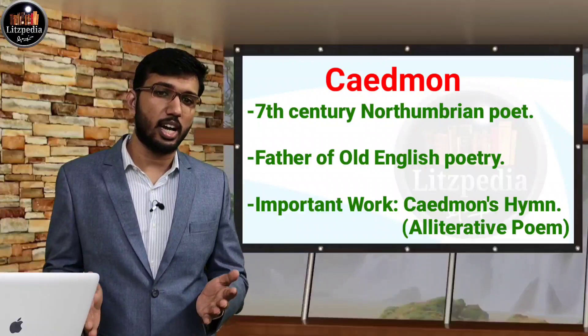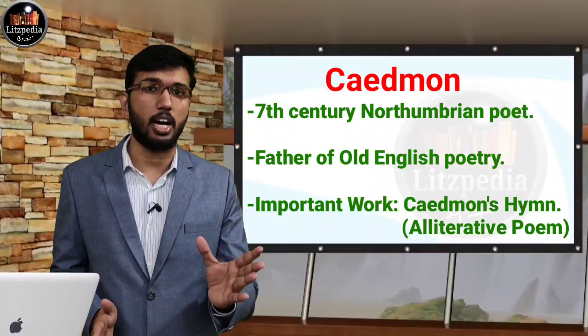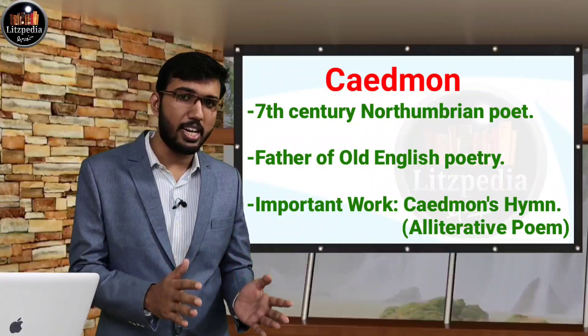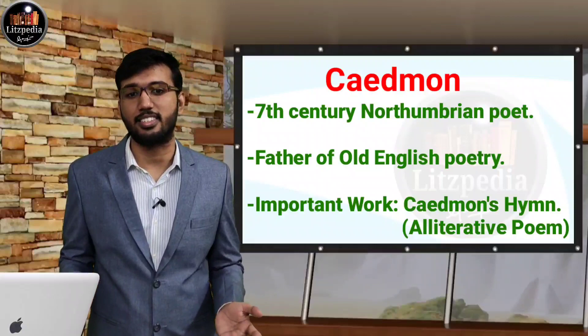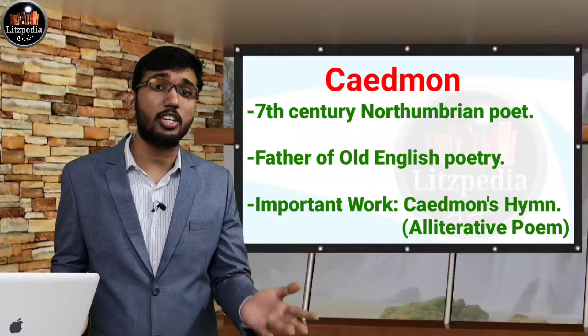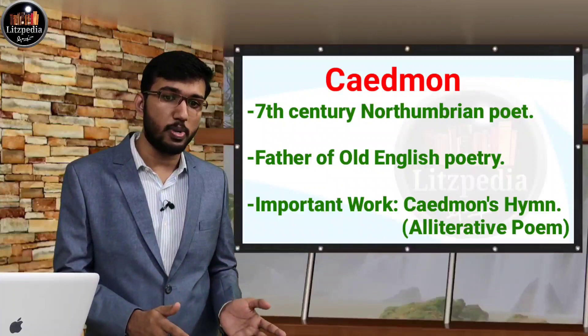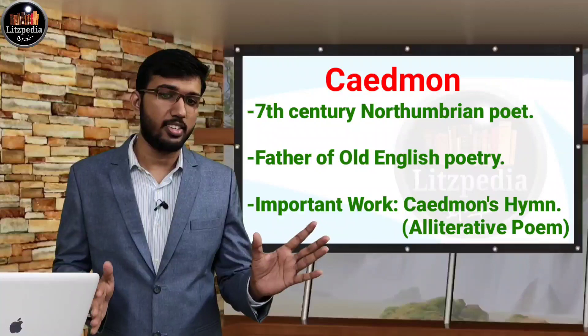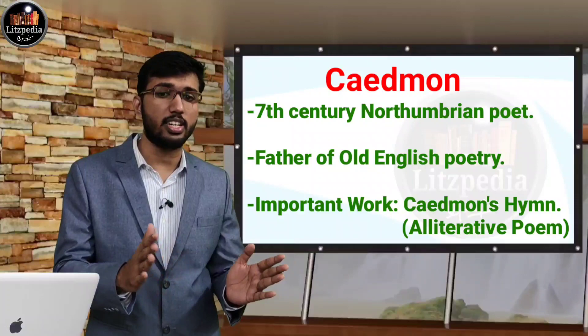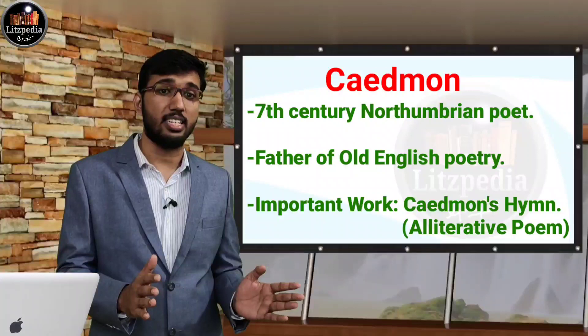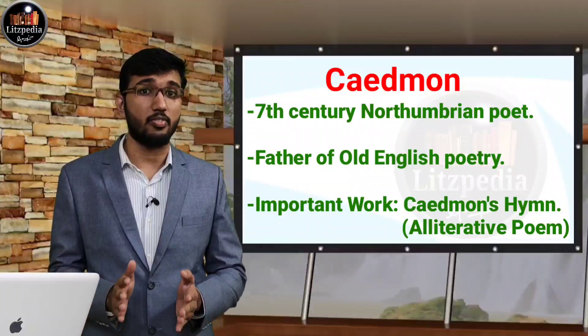At a feast that Caedmon attended, everyone was asked to sing a song on a harp. Caedmon actually left the hall ashamed that he could not contribute a song because he is illiterate. Later, a man appeared in his dream and said, 'Sing to me the beginning of all things.' Caedmon was then able to sing verses and words that he had not heard of before. That's how, through a miracle, he got the ability to recite and sing poems. According to Bede, Caedmon founded the school of Christian poetry called the Caedmonian School. And Caedmon's Hymn is also very important — it is an alliterative vernacular verse poem in nine lines. That is a basic thing regarding Caedmon's Hymn. He is a 7th century Northumbrian poet and is also called the father of Old English poetry.